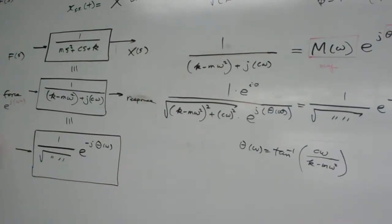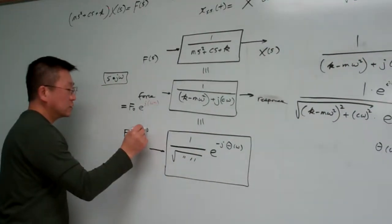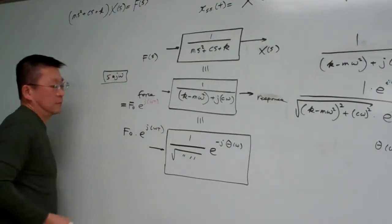And this is our input, f zero times e to the j omega t. Okay.